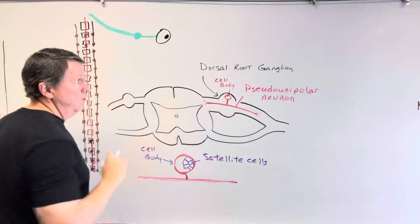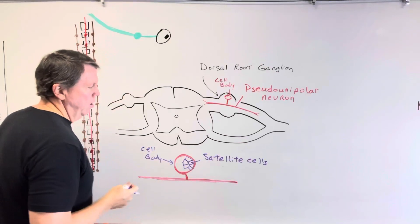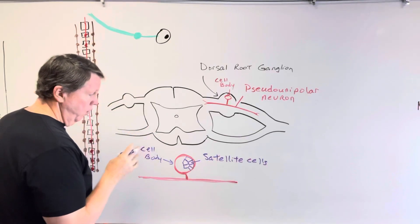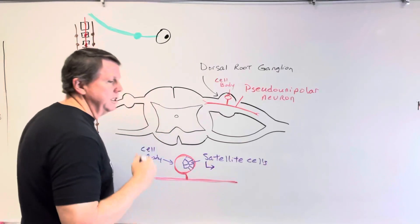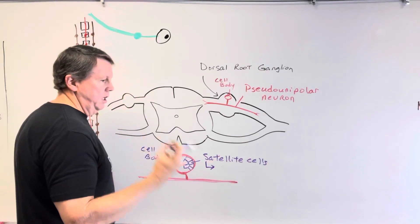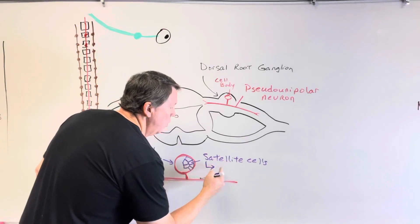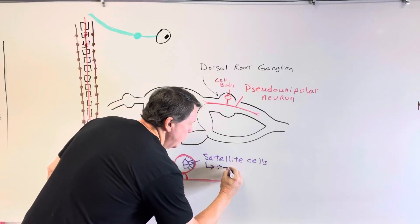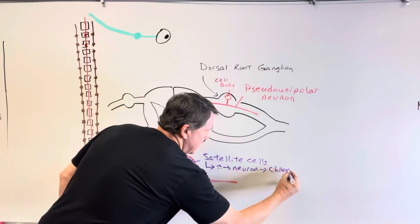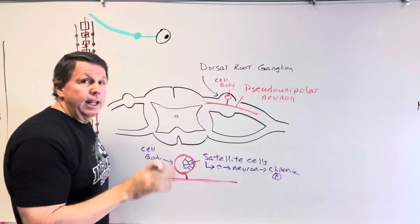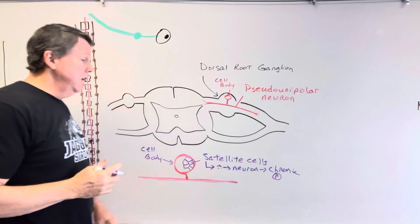I'm only drawing this in the dorsal root ganglion, but satellite cells are also found in other areas — including the autonomic nervous system. Here's something important: if we get damage to a nerve, these satellite cells can release substances such as cytokines, tumor necrotic factor, chemokines, and interleukins. Those substances can travel to another neuron and actually cause chronic pain. So satellite cells play a role in turning acute pain into chronic pain.